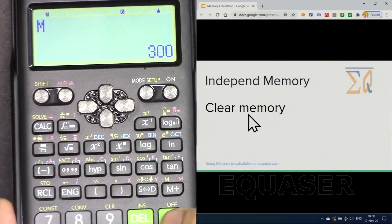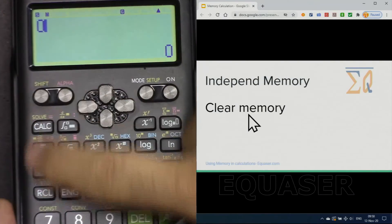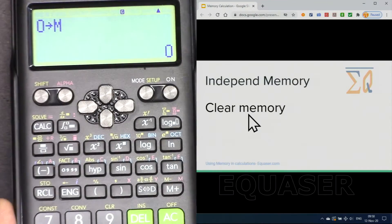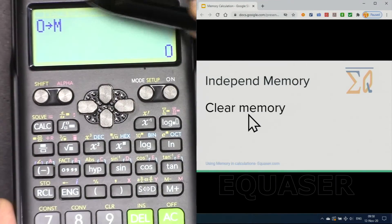To clear the memory we just put 0 shift store M so we stored 0 into memory and the M disappeared.